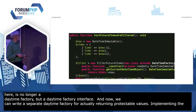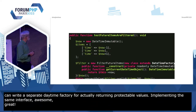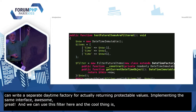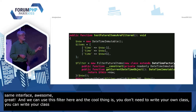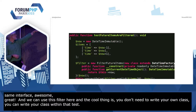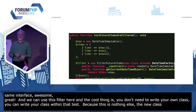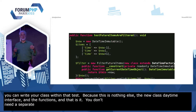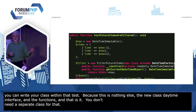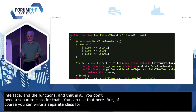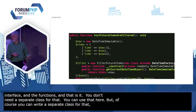Now we can use this filter here, and you don't even need to write your own separate class — you can write the class inline within that test, using `new class extends DateTimeFactoryInterface` with the functions. You don't need a separate class for that. But of course, you can also write a separate class. As soon as you want to use it twice in two different places, it makes sense to have a separate class.